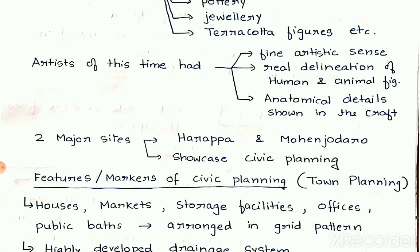By examining these evidences, we can see the artists of this time had a fine artistic sense and real delineation of human and animal figures. Earlier in prehistoric time, animal and human figures were drawn in a similar fashion. But in Indus Valley times, we can see a clear distinction between human and animal figures. The anatomical details are also shown in their craft, and the sculptures were made exact, similar to human or animal figures, with each intricacy carefully attended to. The two major sites of Indus Valley civilization are Harappa and Mohenjo-daro, though there are other sites as well.